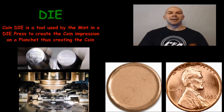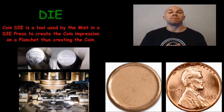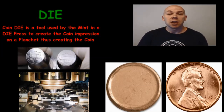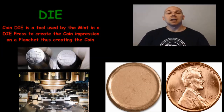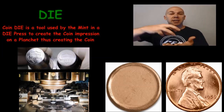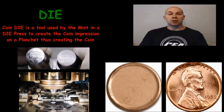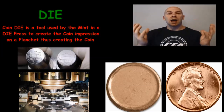Die. A coin die is a hardened tool used by the mint to strike blank planchets and form the images and inscriptions to create the coin in a die press. One way many people describe this is to think of the die as the mint's cookie cutter in the shape of the desired coin, and the blank planchet is the cookie dough that the coin is then cut out of.